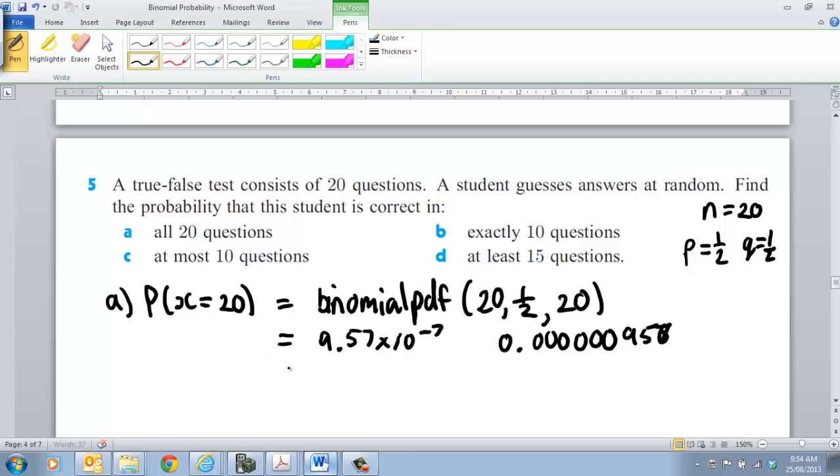So that's equal to 9.57 by 10 to the minus 7. You obviously understand that value as being 0.0000957. We would say it's approximately zero chance. They've got pretty well about one chance in a million of guessing all 20 correct. So in terms of making a guess, you're not going to get a good mark by just guessing. You've got to know your work.